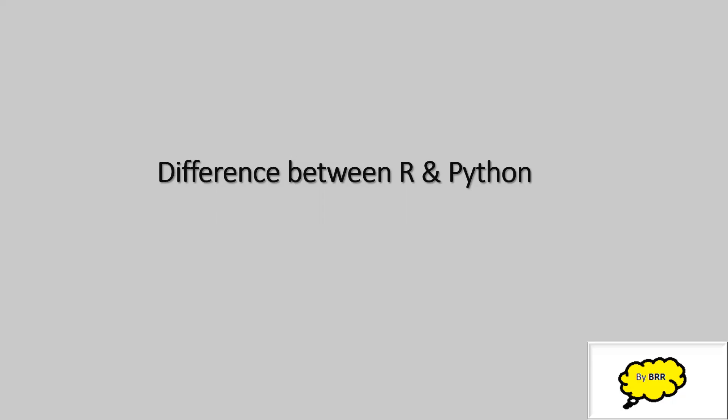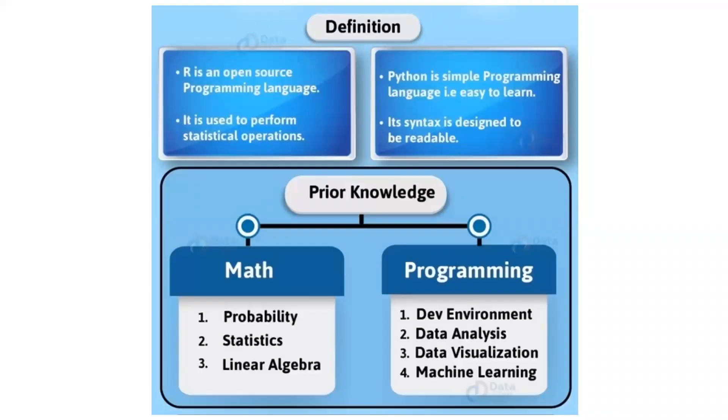Looking at the definitions of these two languages: R is an open source programming language, and Python is a simple programming language that is easy to learn. R is used to perform statistical operations, whereas Python's syntax is designed to be readable.